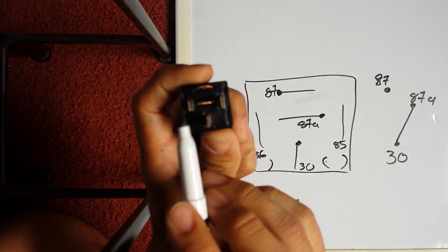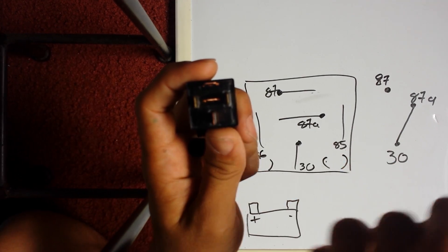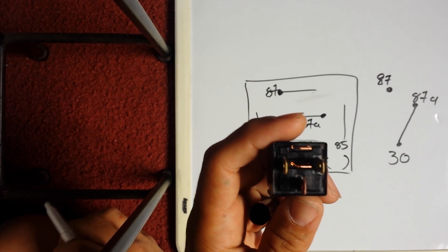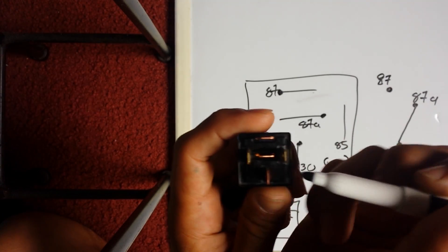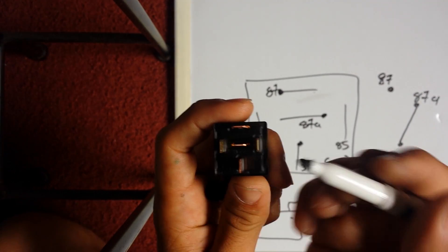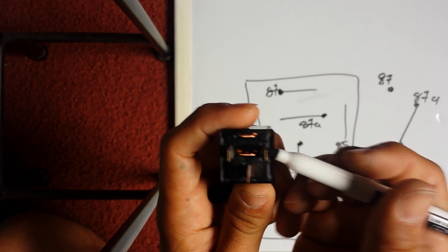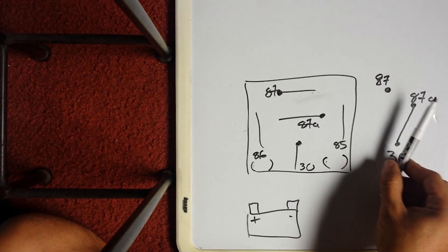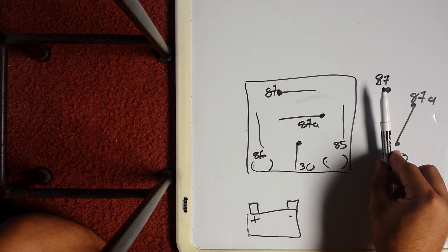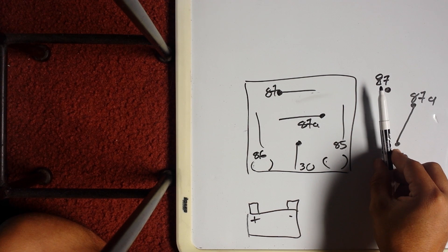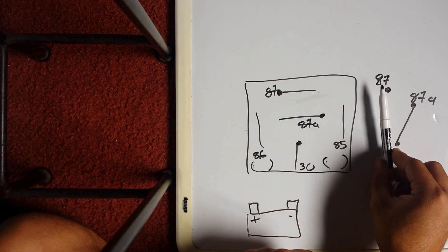Now if I have positive here, as soon as I put negative here, you'll hear a click. You can mess with it with a power inverter if you have one, or a 12-volt battery. But as soon as you put negative here, as long as you got positive on this side, you're gonna hear a click. And all that click is doing is switching from 87a to 87.